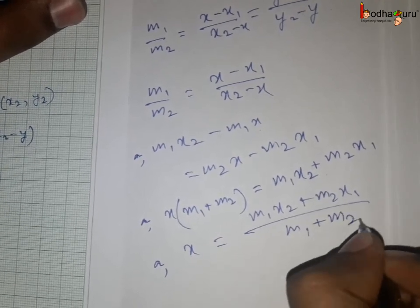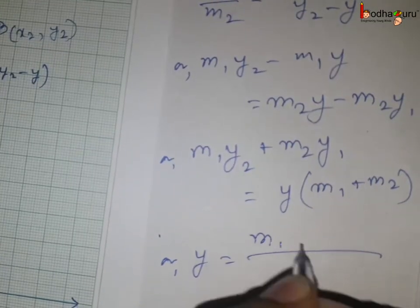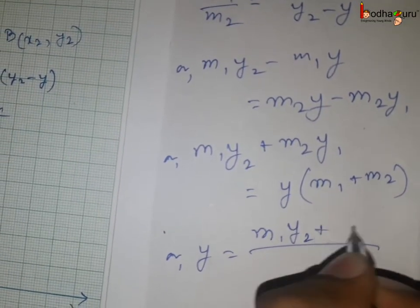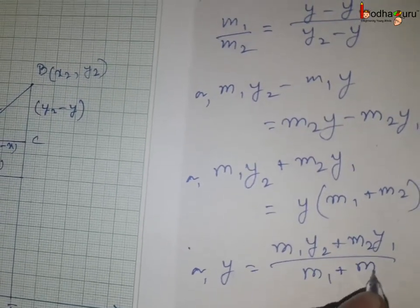Same way PD by BC equal to M1 by M2. PD is equal to (y minus y1) and BC equal to (y2 minus y). So if we solve it we will get y equal to (M2·y1 plus M1·y2) divided by (M1 plus M2).